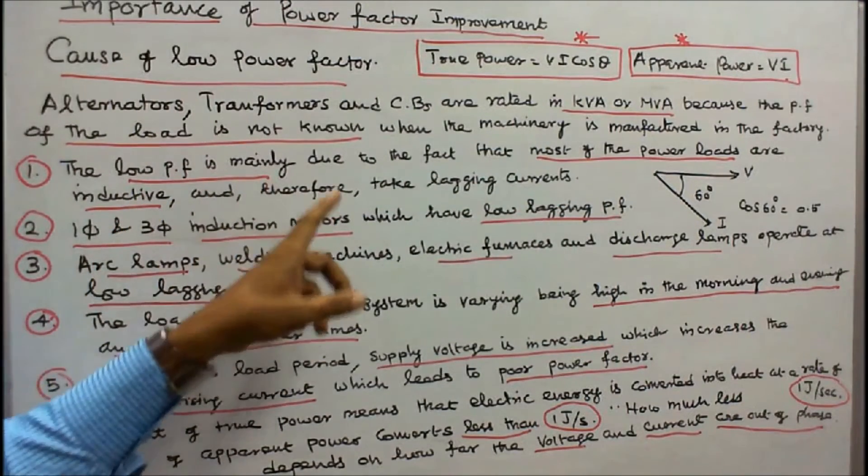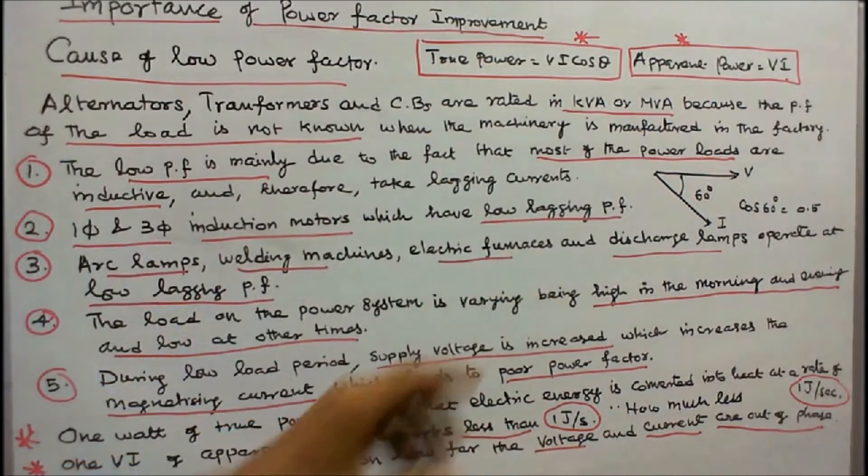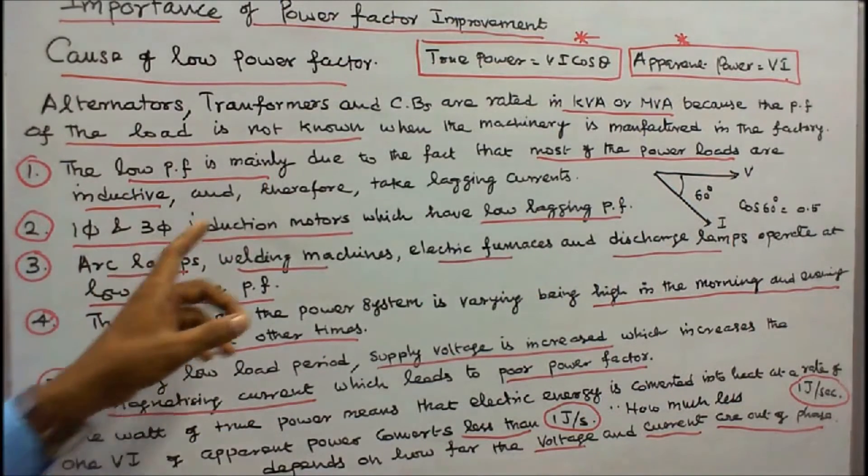Number 1: The low power factor is mainly due to the fact that most of the power loads are inductive and therefore taking lagging currents. Number 2: Single phase and 3-phase induction motors.